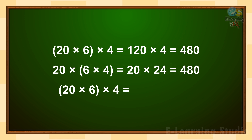So, bracket open 20 multiply 6 bracket close, multiply 4, is equal to 20 multiply bracket open 6 multiply 4 bracket close. Again, both give us 480 as a result.